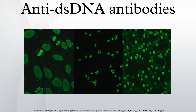The Farr assay is used to quantify the amount of anti-dsDNA antibodies in serum. Ammonium sulfate is used to precipitate antigen-antibody complexes that form if the sera contains antibodies to dsDNA, and the quantity of these antibodies is determined using radioactively labeled dsDNA. Although this test is very specific, it is of little use in routine diagnostic laboratories due to its laboriousness and use of radioactive materials. The Farr assay is one of the only tests that detects high avidity antibodies and has the ability to detect antibodies of any isotype.